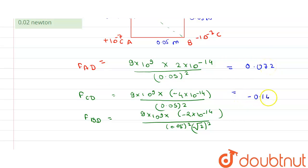this is equal to -0.144, or we can take only magnitude because this minus sign indicates the direction of force, and this is equal to 0.05.